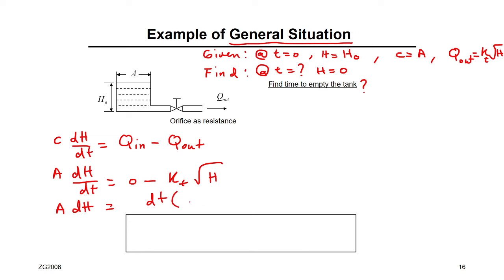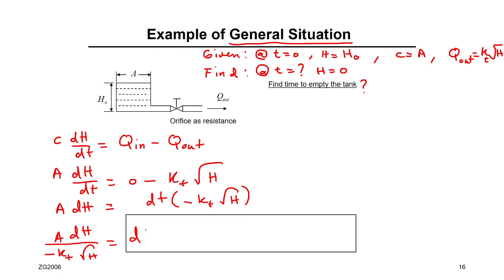Step by step: A·dH/dt = -K·√H. Taking dH to one side gives A·dH / (-K·√H) = dt. Now integrate both sides.